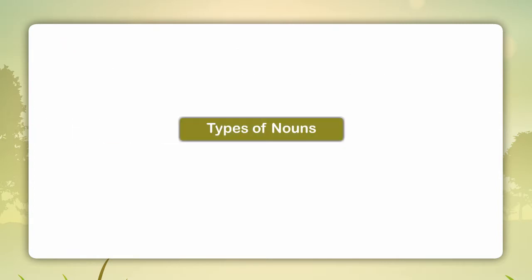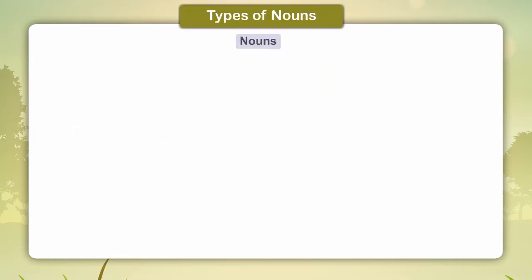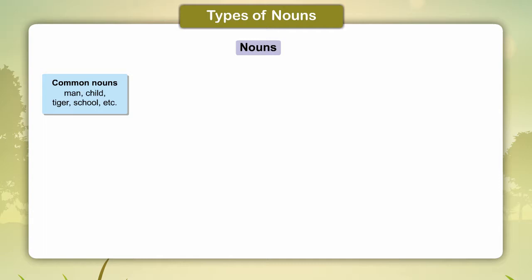Types of Nouns. Common nouns: Man, Child, Tiger, School, etc. Concrete nouns: Gold, Soil, Wood, etc.